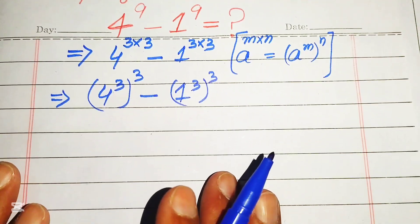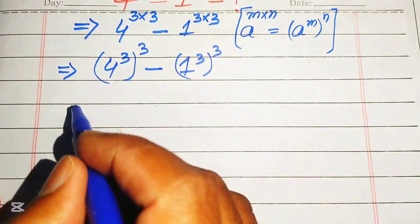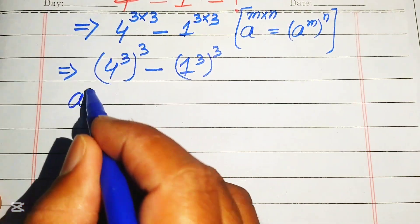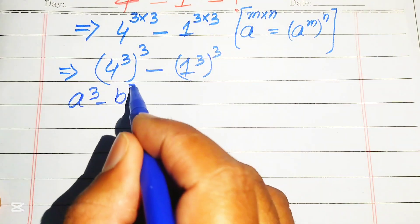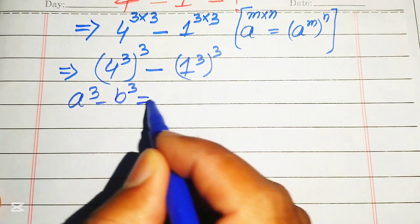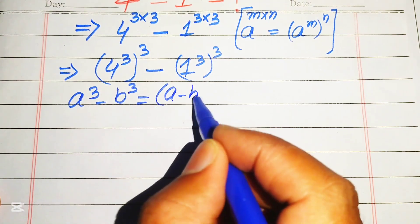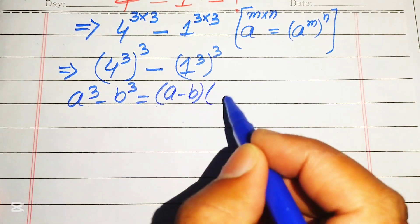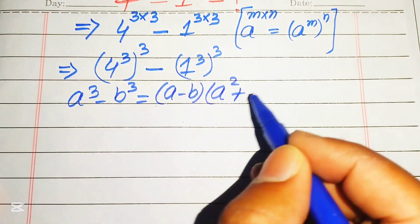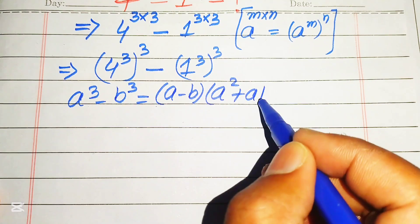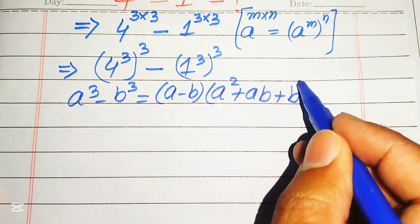Now we apply the cubic formula. You know that if we have a cubed minus b cubed, it equals a minus b, times a squared plus ab plus b squared.